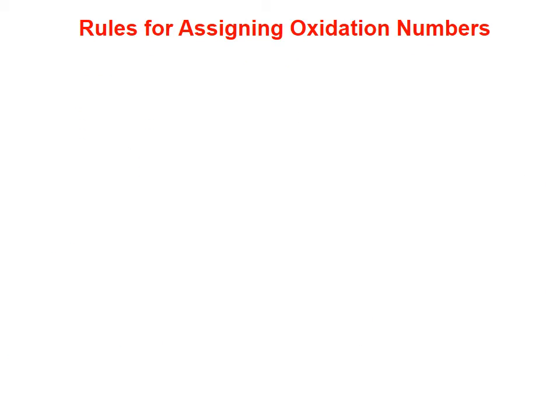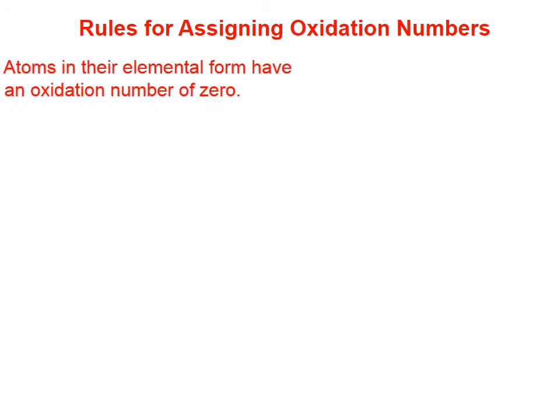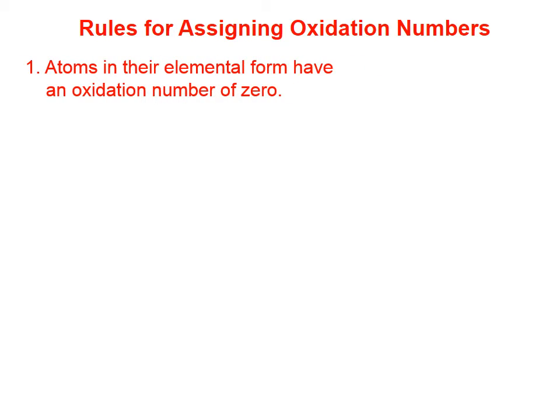Let's go over the rules for assigning oxidation numbers. Rule 1: atoms in their elemental form have an oxidation number of 0. That is, each of the atoms shown here on the right is considered to have an oxidation number of 0 — for example, each fluorine atom in F₂ has an oxidation number of 0.